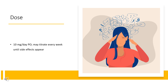Dose. Narcolepsy: 10 mg per day PO; may titrate every week until side effects appear, not to exceed 60 mg per day. Attention deficit hyperactivity disorder: 5 mg PO once daily or twice daily, 4 to 6 hours apart; may increase 5 mg per day each week until optimal response. Rarely necessary to exceed 40 mg per day.